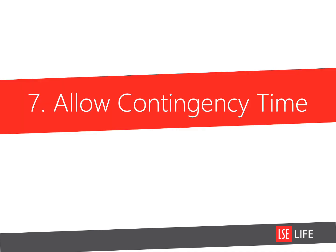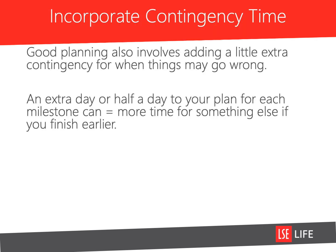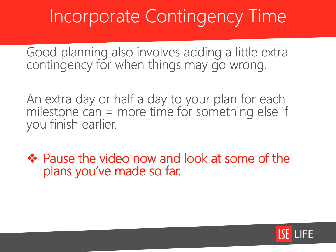Step seven: allow a little contingency time. Good planning also involves adding a little extra contingency for when things may go wrong. An extra day or half a day to your plan for each milestone can equal more time for something else if you finish earlier. Pause the video again and look at some of the plans you've made so far. As you continue to fill in the planner, allow a little extra time than you think activities will take. Then, if you don't use that time, you've got an added bonus of some spare time to work on something else.